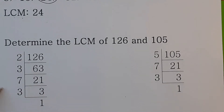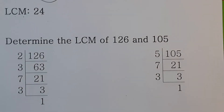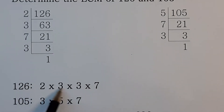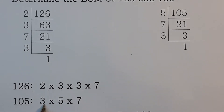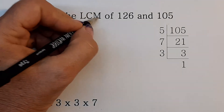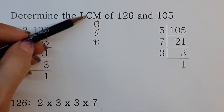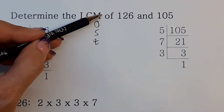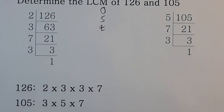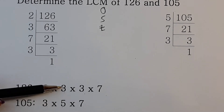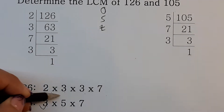You get the prime factors of each number and write them in ascending order. One hundred and twenty-six is two times three times three times seven. One hundred and five is three times five times seven. To remember what to do: think that M in LCM stands for 'most.' Now you circle the numbers that are the same in both lines.